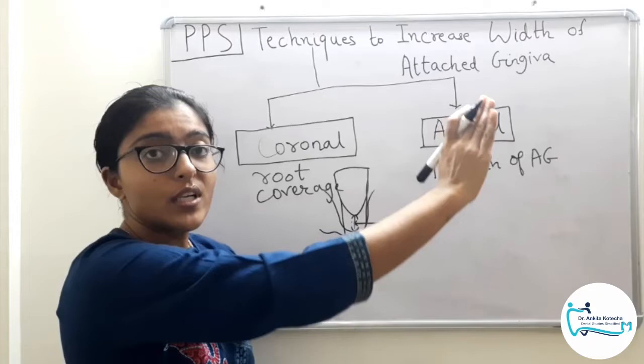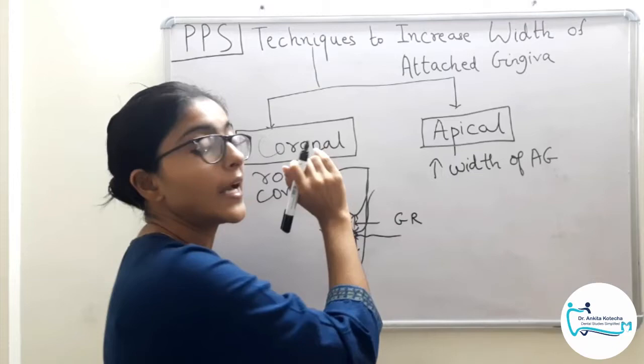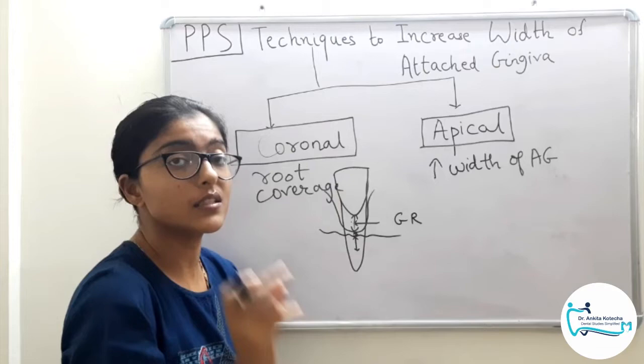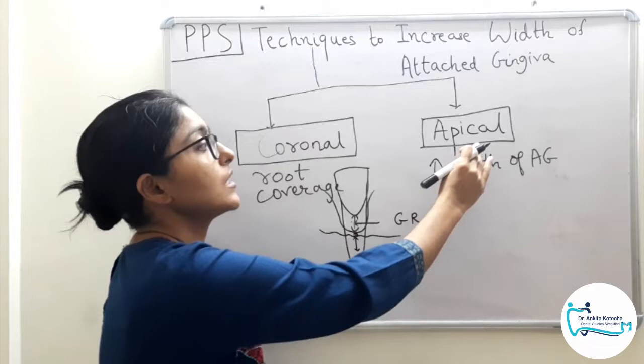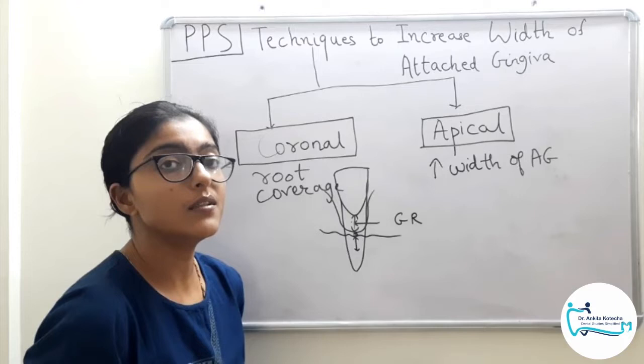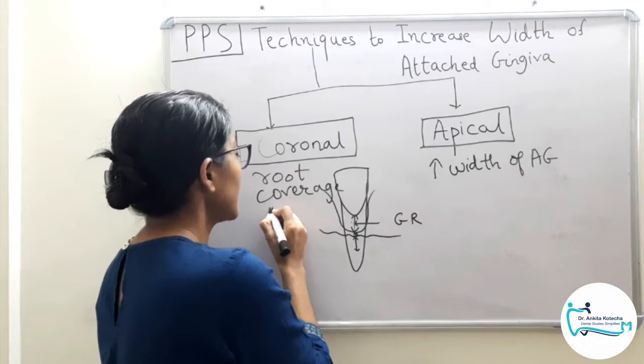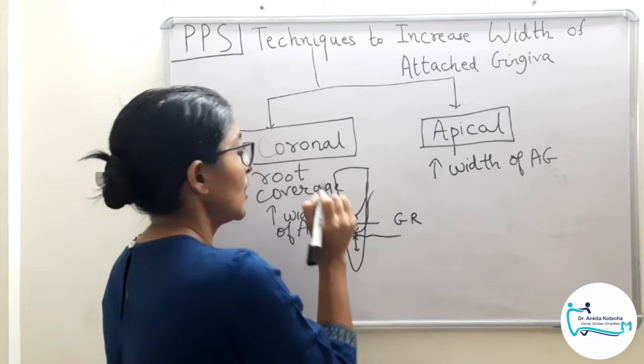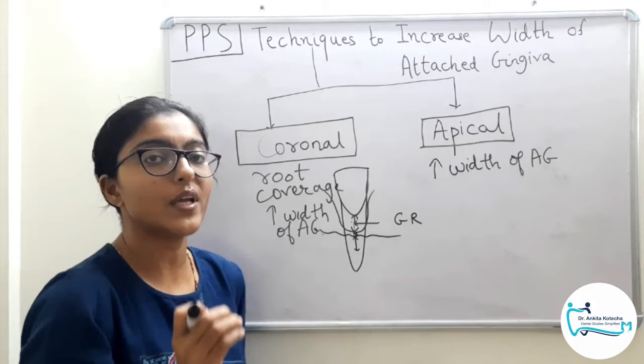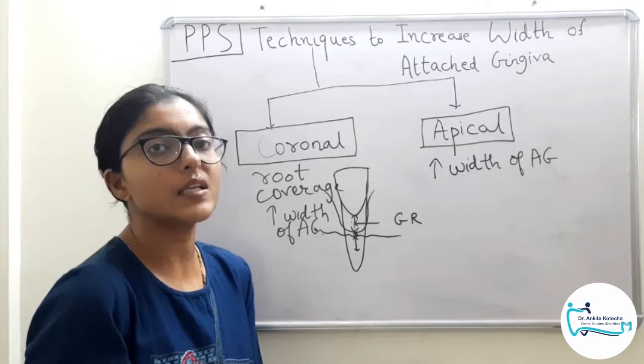Some techniques increase attached gingiva coronal to the recession — providing dual benefits: increased width plus root coverage. Others increase attached gingiva apical to the recession, with only one benefit: increasing width of attached gingiva. We will perform techniques either coronal or apical.